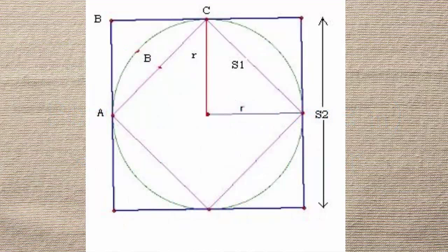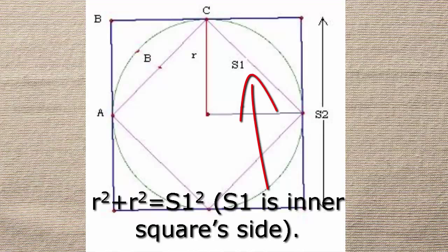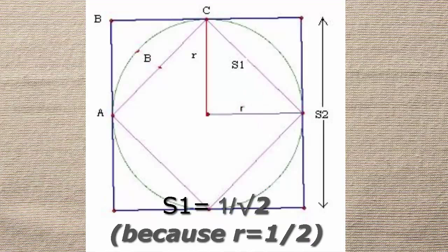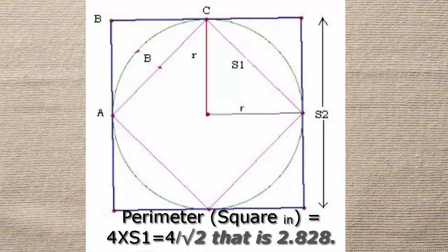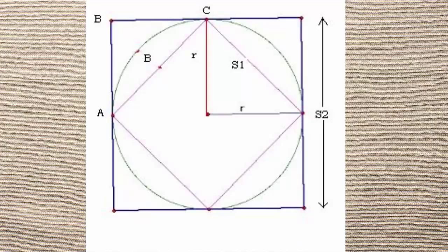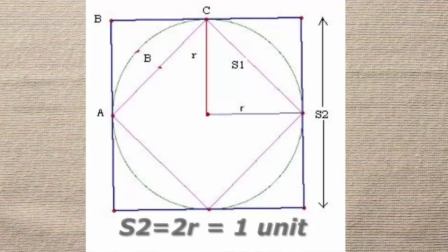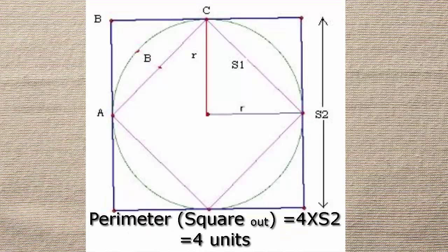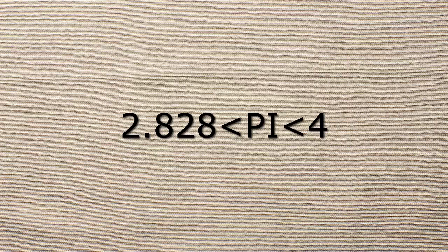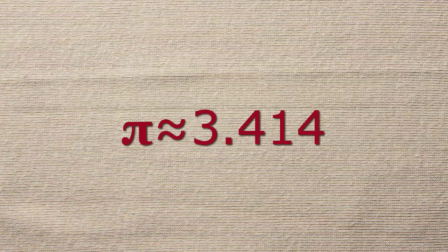From the figure, we can calculate the inner and outer square's perimeter. Using the Pythagorean theorem, r² + r² = s1², where s1 is the inner square side. We get s1 = 1/√2, because r = 1/2. The perimeter of the inner square = 4 × s1 = 4/√2 = 2.828. The outer square's side equals the diameter of the circle, so s2 = 2r = 1 unit, and the perimeter of the outer square = 4 × s2 = 4 units. Using these values: 2.828 < π < 4. So if we consider pi to lie at the midpoint of this range, pi may be approximated as 3.414.